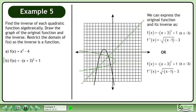We can express the original function and its inverse as shown. The first set corresponds to the left arm of the original graph and its inverse, while the second set corresponds to the right arm of the original graph and its inverse.